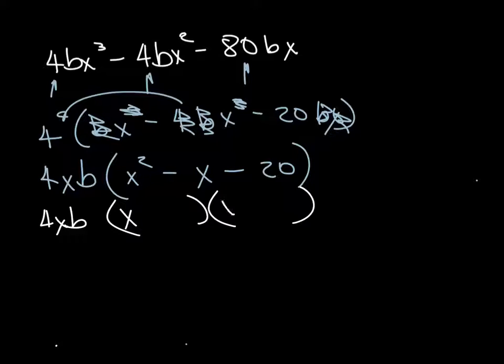So we've got an x, an x, what two numbers multiplied together, give me 20. And if I take the difference, or if I add them, I get 1. And that's going to be 5 and 4. 5 times 4 is 20. The difference between them is 1, and that's what that is right there. So I'm going to use a 5, and I'm going to use a 4.